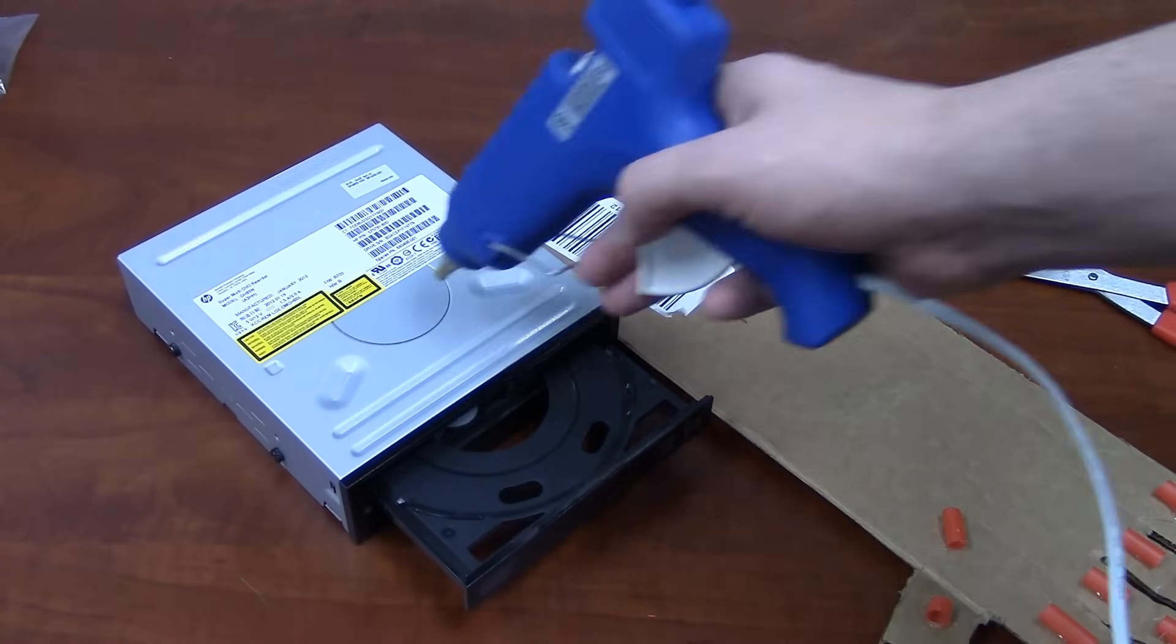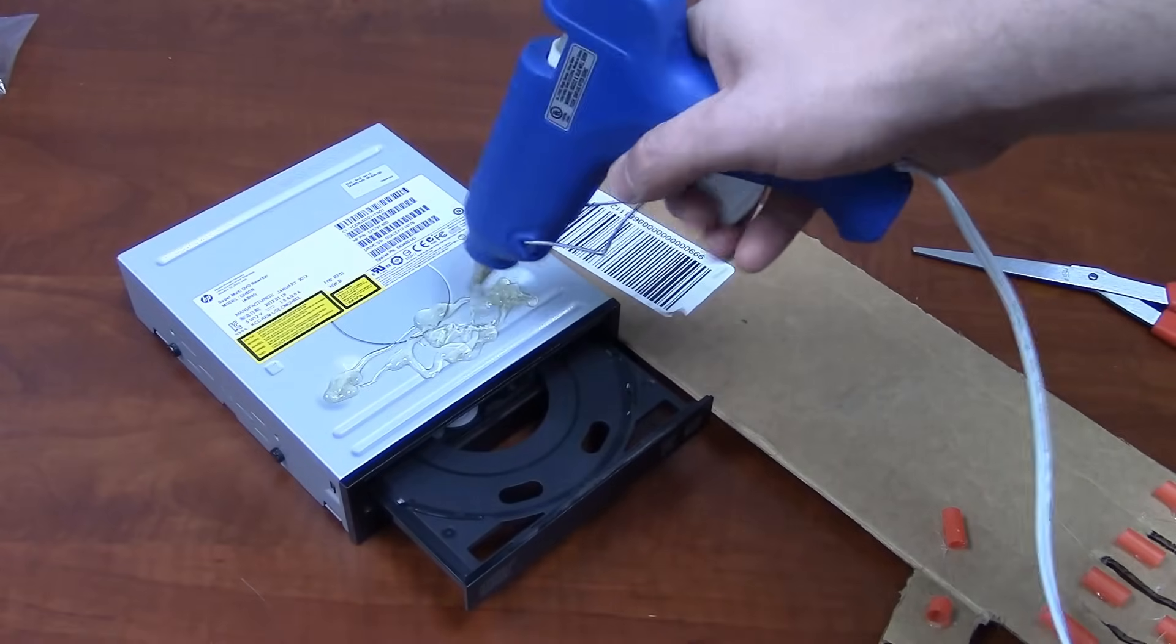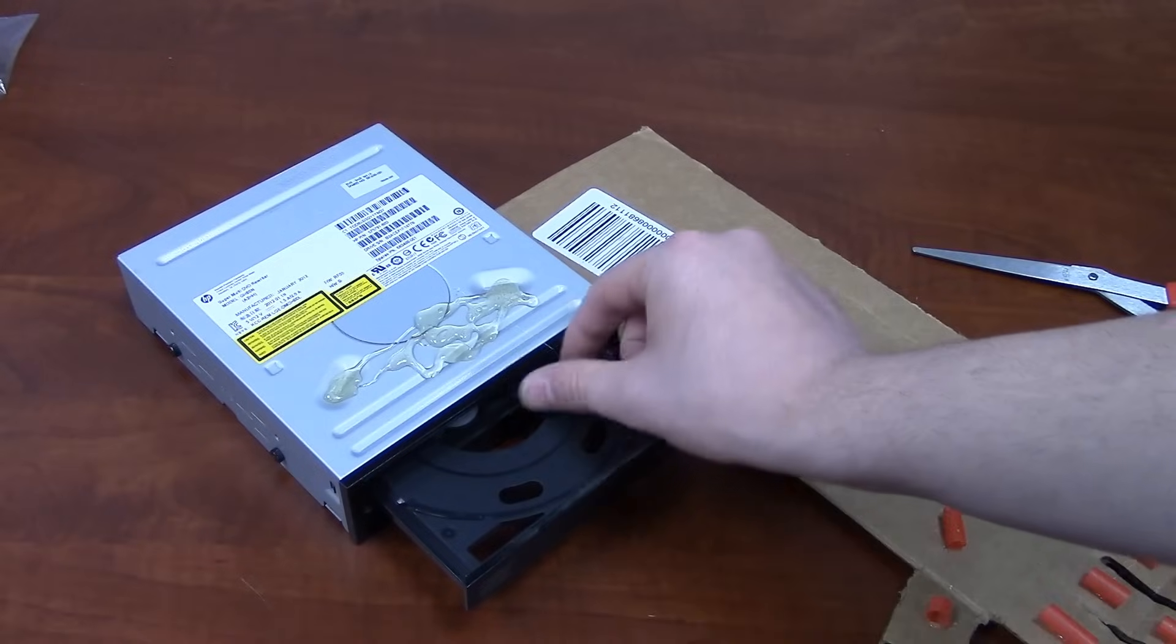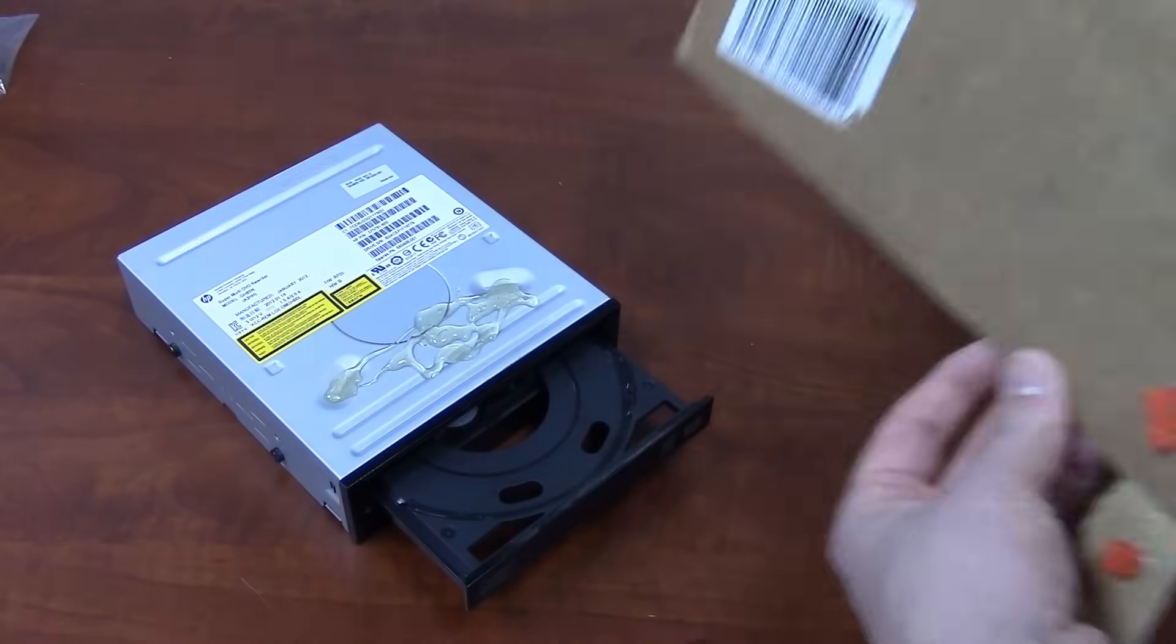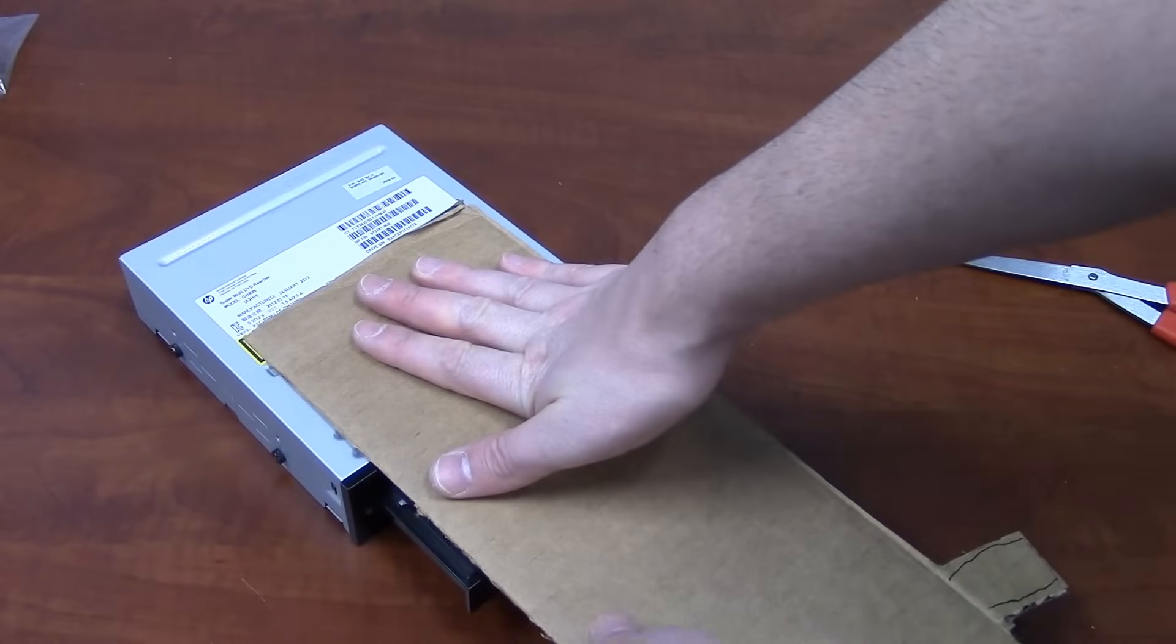Now if you want to tape it to the drive, that's fine, but I'm just going to put a big old glop of glue here. Try to make sure it doesn't get into the tray, and then adhere it to our cardboard hand.